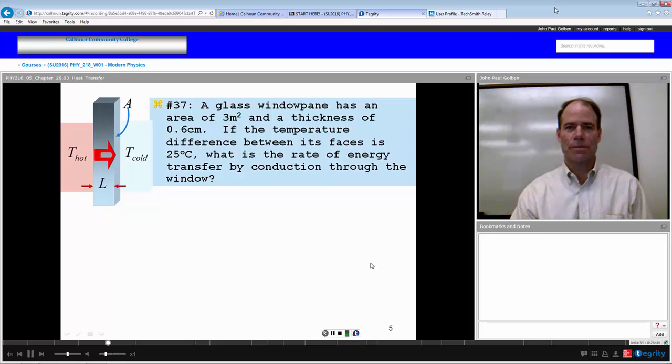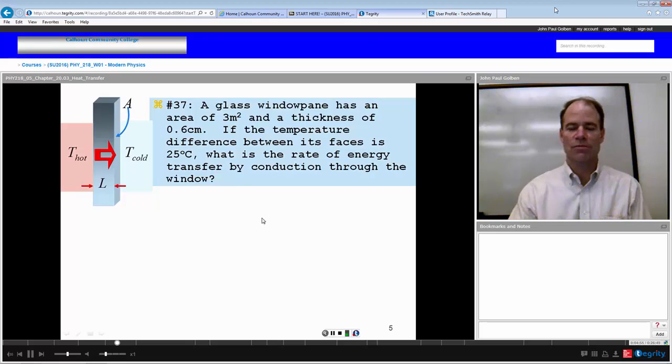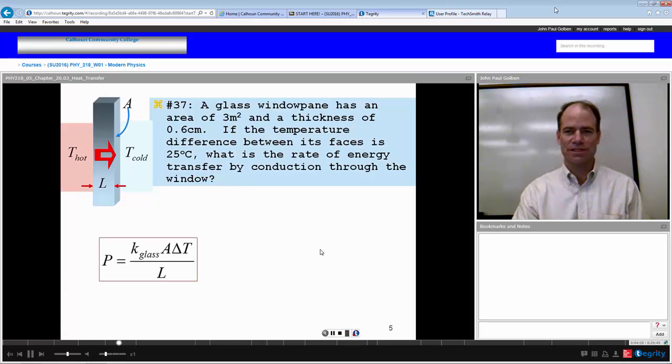Let's try an example. A glass window pane has an area of 3 square meters and a thickness of 0.6 centimeters. If the temperature difference between its faces is 25 degrees Celsius, what's the rate of energy transfer by conduction through the window? If we're talking about rate of energy transfer, anytime you talk about rate, you're talking about something per time. In this case, energy per time, we're talking power. So we're looking for the power through this window pane.